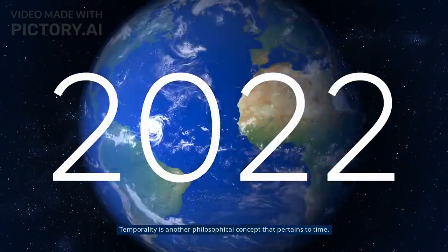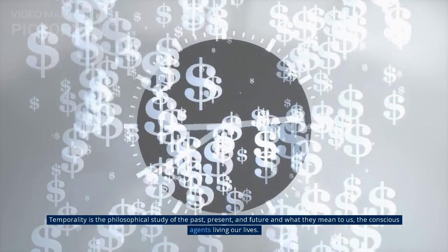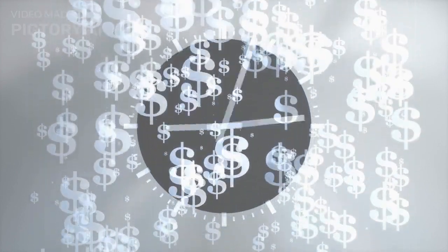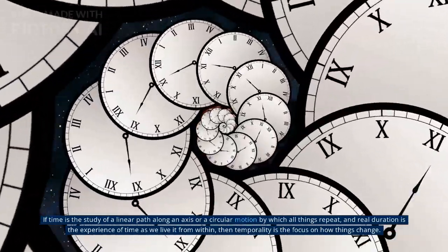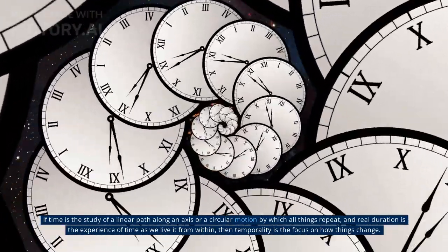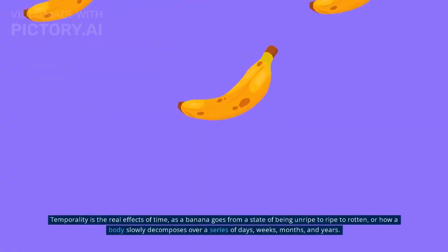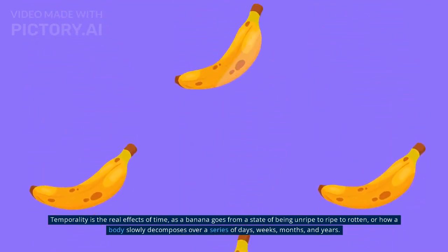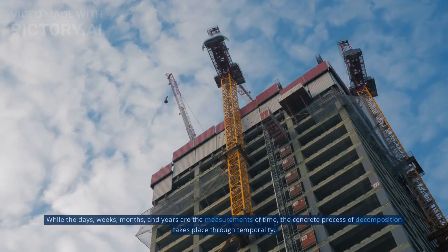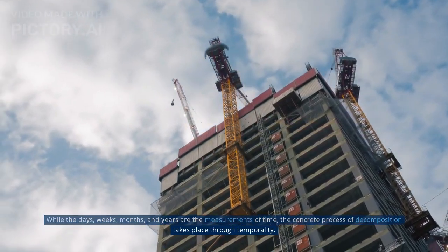Number 4: Temporality. Temporality is another philosophical concept that pertains to time. Temporality is the philosophical study of the past, present, and future, and what they mean to us, the conscious agents living our lives. If time is the study of a linear path along an axis or a circular motion by which all things repeat, and real duration is the experience of time as we live it from within, then temporality is the focus on how things change. Temporality is the real effects of time, as a banana goes from a state of being unripe to ripe to rotten, or how a body slowly decomposes over a series of days, weeks, months, and years. While the days, weeks, months, and years are the measurements of time, the concrete process of decomposition takes place through temporality.